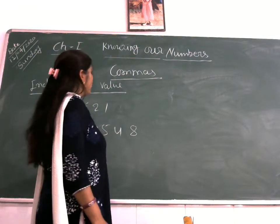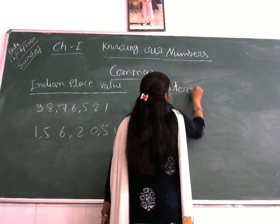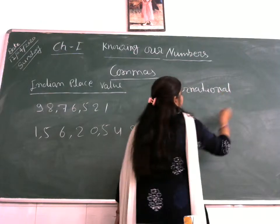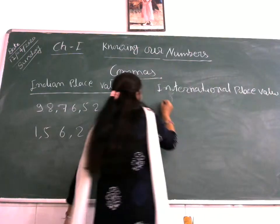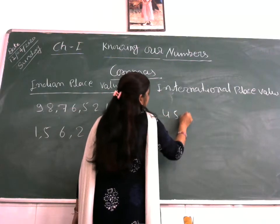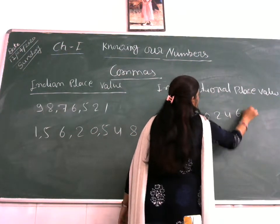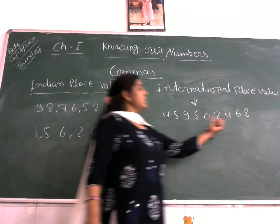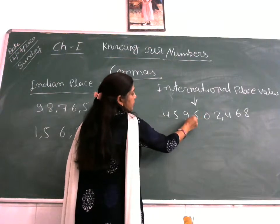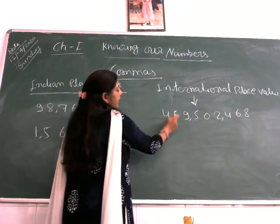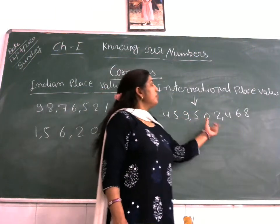According to the International place value system, you count Ones, Tens, Hundreds — put a comma after 3 digits — then Thousands, Ten Thousands, and after every 3 digits you put a comma: 1,000 — 10,000 — 100,000 (comma) — Million — 10 Million — 100 Million. This is the International number system for placing commas.